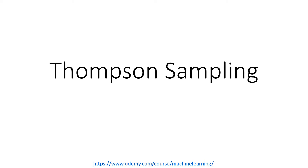Hello, today I'm going to talk about the Thompson sampling algorithm. This is going to be similar to the algorithm we already talked about, which is the upper confidence bound algorithm. Both those algorithms are reinforcement learning algorithms, so you are going to get rewarded by doing the right thing. We are going to use this algorithm to solve the multi-armed bandit problem, which we already solved using the upper confidence bound algorithm. Then we are going to compare the two.